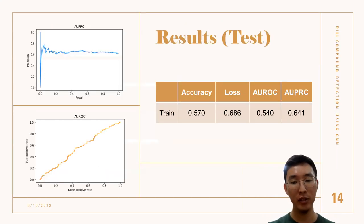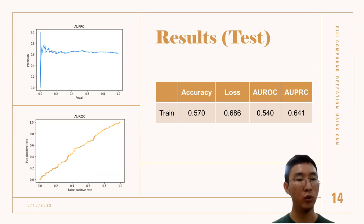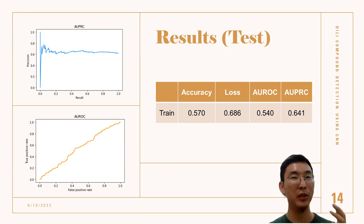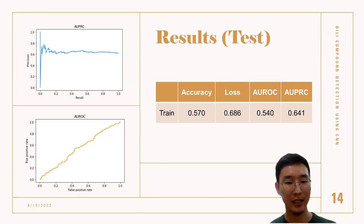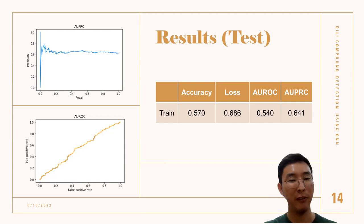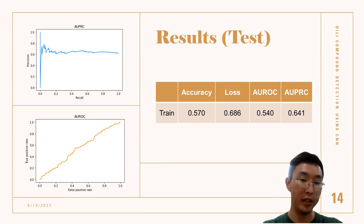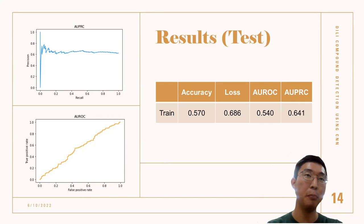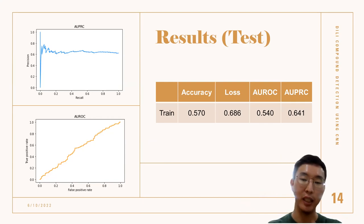The flattened result went through a lot of conversions, and due to that, the test accuracy was not high — 0.57 with a loss of 0.686, with AUROC and AUPRC both showing around 0.5 to 0.6. One might look at this AUROC graph and say this model does not know or is incapable of determining whether a compound is DILI positive or DILI negative.